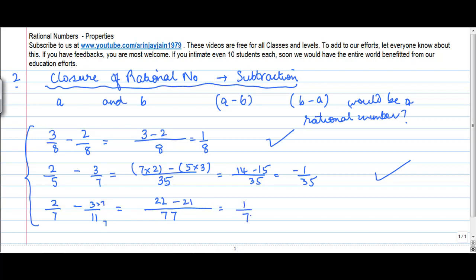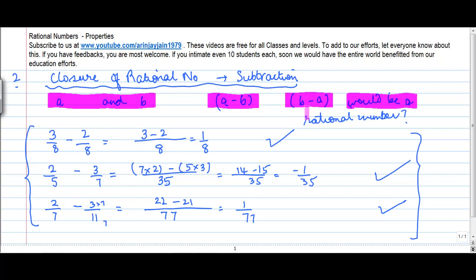This equals 1/77, which is again a rational number. So we say that rational numbers are closed under subtraction, which means that for any two rational numbers A and B, the difference of these two numbers, whether it is A minus B or B minus A, would always be a rational number.